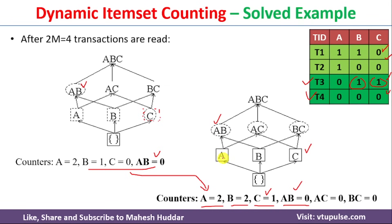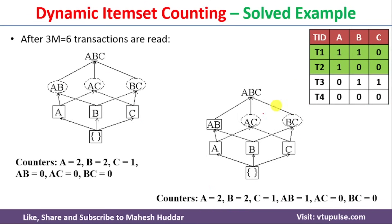Now that B and C are frequent (dashed squares), we need to add their superset BC as a dashed circle with value 0, as BC may become a frequent item set in the future. Similarly, since A and C are both frequent, we add AC as a dashed circle with value 0. Note that for AB we have already read T3 and T4, but for AC and BC no transactions have been counted yet.